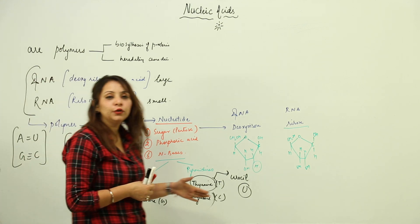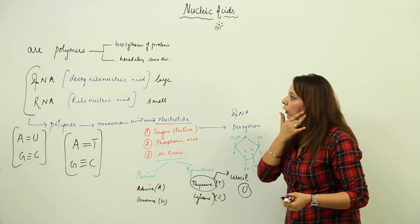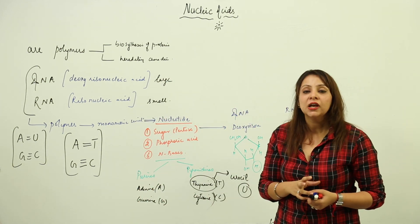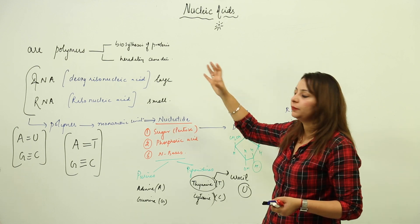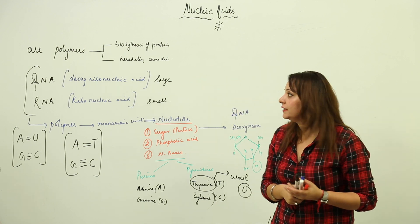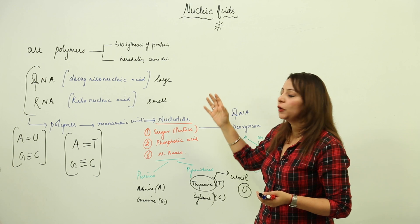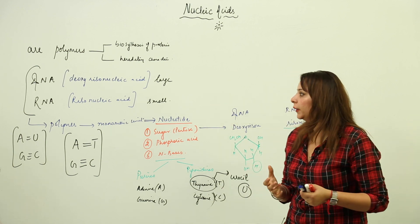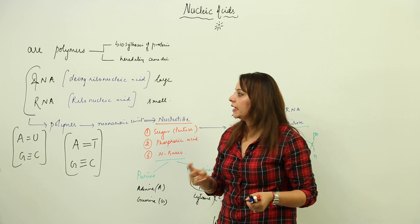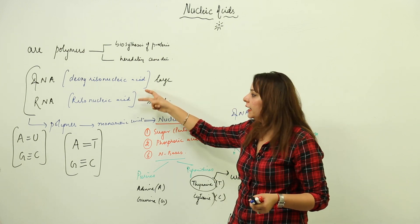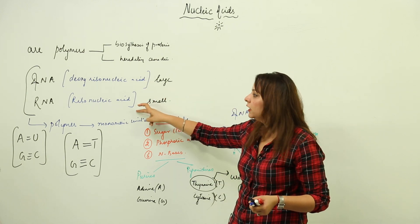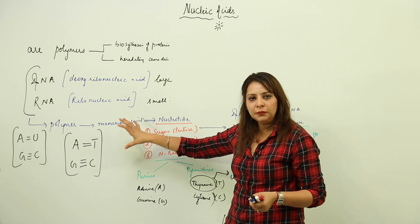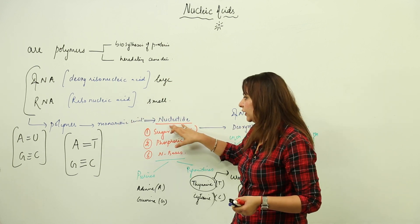So this is the basic introduction to nucleic acids. They are polymers whose functions are to help in the biosynthesis of proteins and to transfer hereditary characters from parents to offspring. We have two kinds: DNA (deoxyribonucleic acid), which is bigger, and RNA (ribonucleic acid), which is smaller in size. Both are polymers formed of monomeric units called nucleotides.